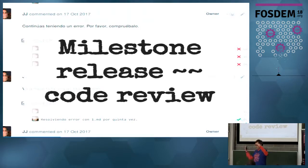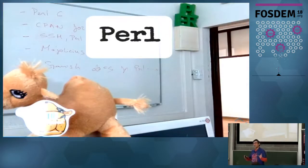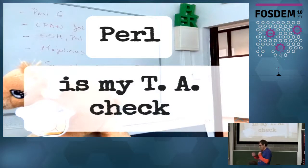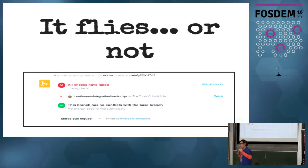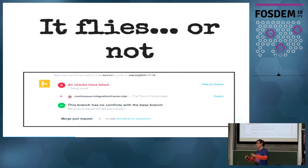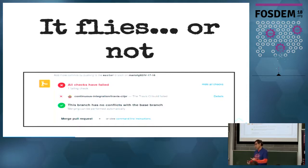I'm going to use milestones as code review — actually review what people are sending. Before, I was basically just checking there were no conflicts when people modified the file. Now I was doing something completely different: writing tests for what people submitted. If tests fail, I don't accept the pull request. The student has to go back to their repository and fix whatever was wrong.